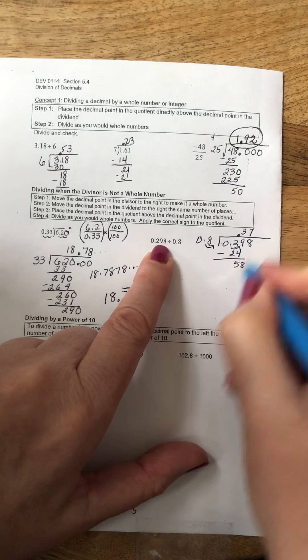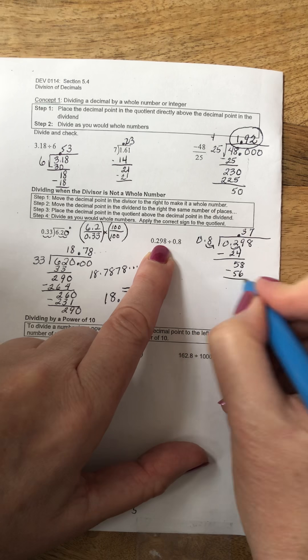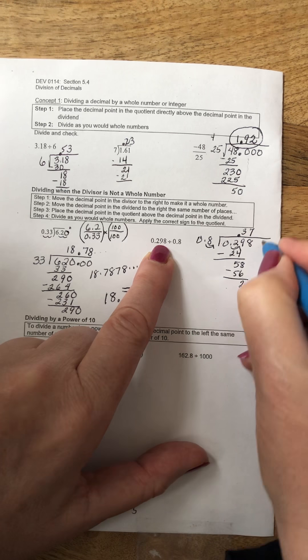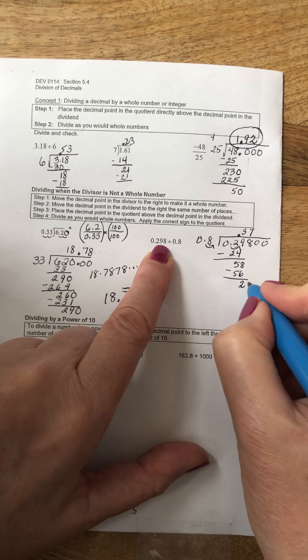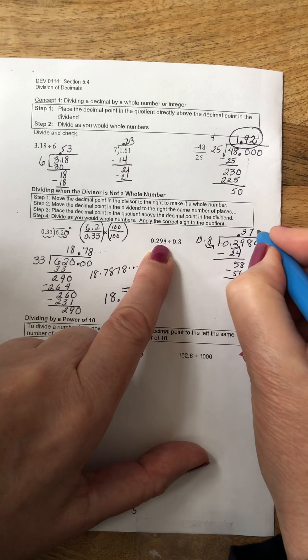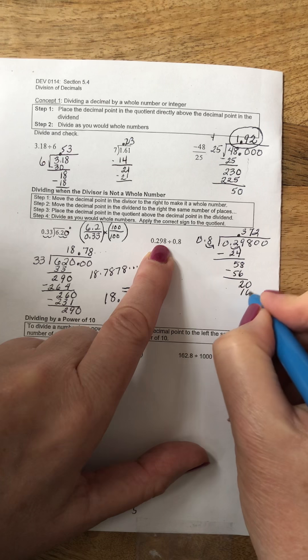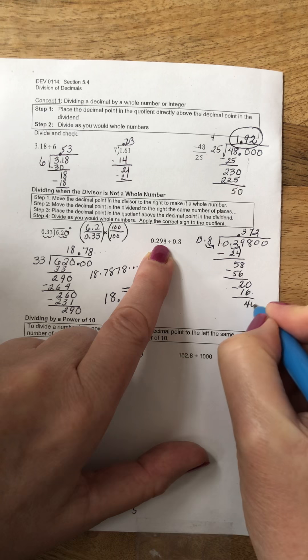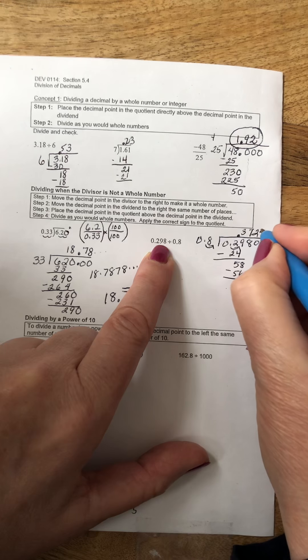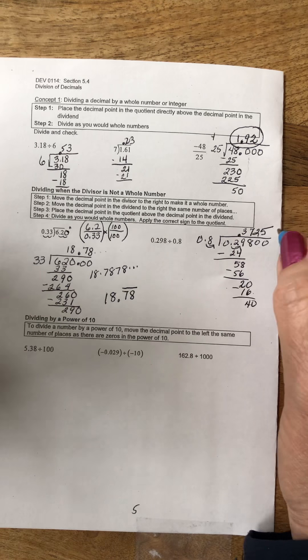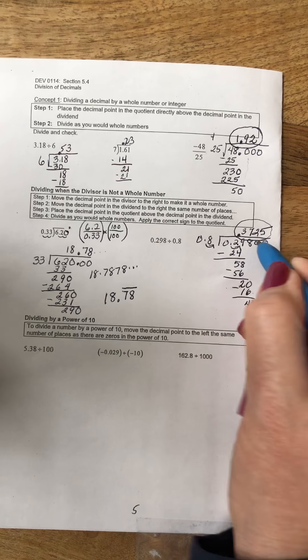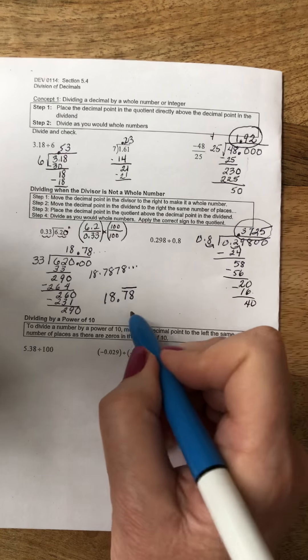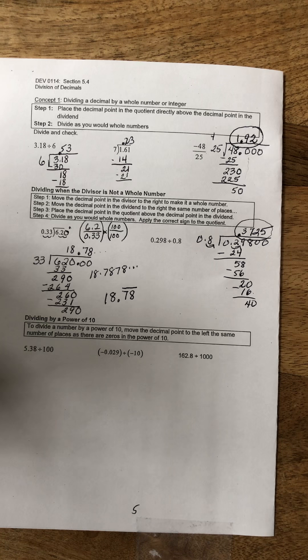7.56, and then I'm going to just add some zeros. We're going to always keep dividing until we have either a terminating decimal as we do here or repeating decimal as we do there.